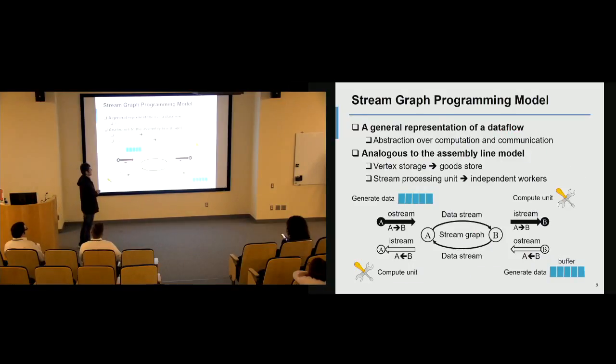The stream graph programming model is a key concept in this DTCraft project. The stream graph is a general representation of a data flow. I know the term is a little bit confusing because it's like a container—many people in software are abusing this term, and the stream graph can have multiple meanings in different places. But in DTCraft, it is a general representation of the data flow graph. It gives you abstraction over computation and communication. The idea is somewhat analogous to an assembly line model, where you have two ends. One end keeps generating data or goods, and the data goes through the underlying channel, which could be either shared memory or a network socket in our case.